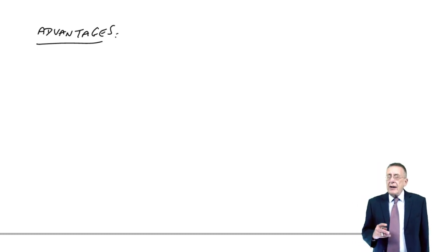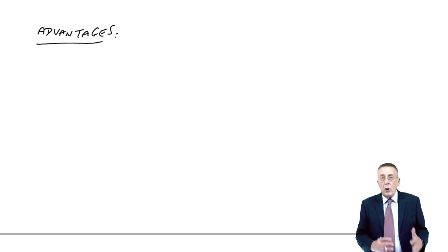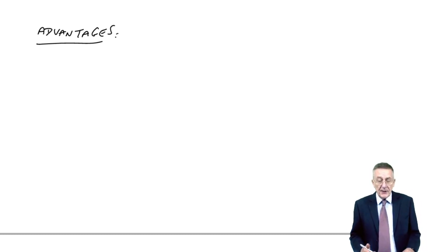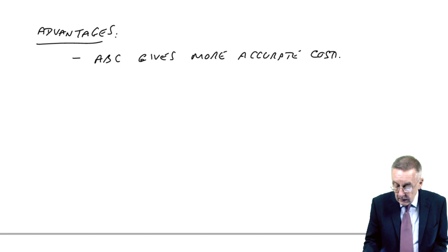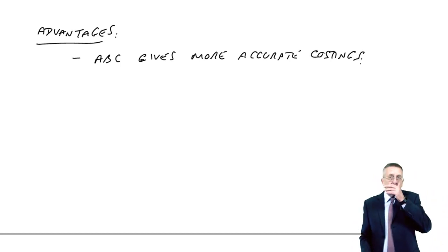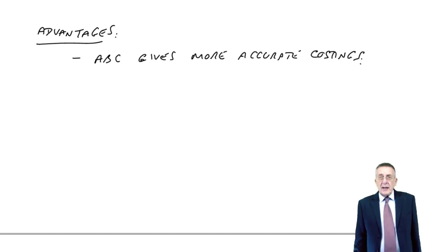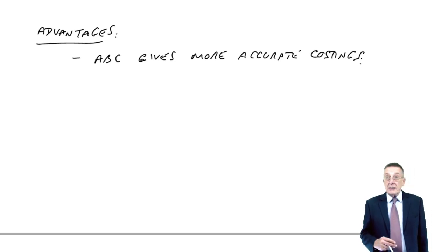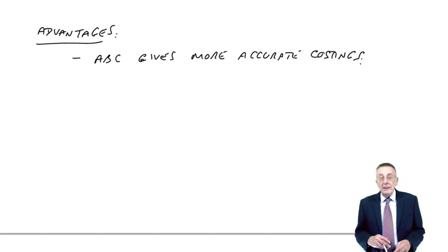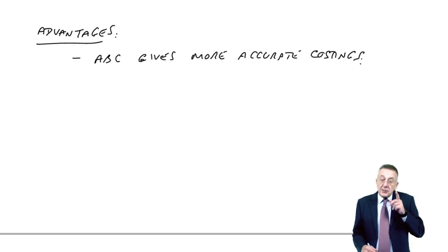I think it should be clear from what we've done and what I've said in the previous two lectures, that activity-based costing gives more accurate costings. However, just saying that on its own isn't enough. Because remember, at the end of the day there is only one business, and the total overheads are 190,000, whichever approach we're using to get a cost per unit.